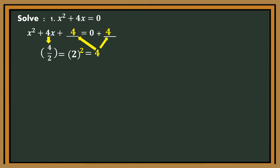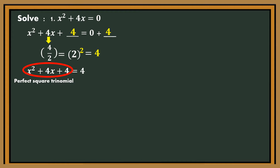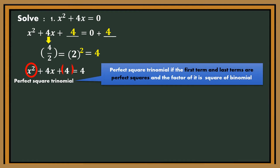Simplify the equation. We will have now: x squared plus 4x plus 4 equals 4. You can see now that the right side of the equation is a perfect square trinomial. Always remember that if the first term and last term of the trinomial are perfect squares, then it is a perfect square trinomial.